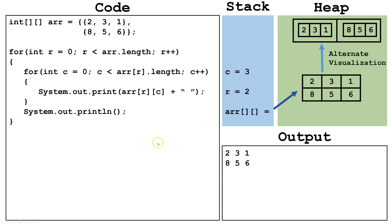A couple of important things to know about tracing with for loops. Notice we use system out print and system out print line. Print will print on the same line, whereas print line will print and then move to the next line. Also, using for loops instead of just printing, we could change values by saying arr[r][c] equals some new value. Another cool thing is instead of incrementing by one, we could increment by two, three, or four — we wouldn't have to go through each index one by one if we wanted to skip some.